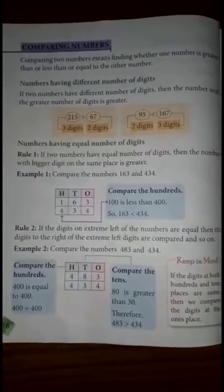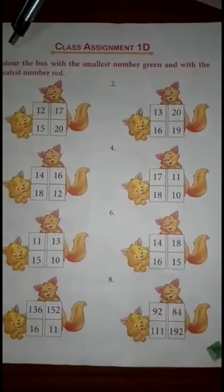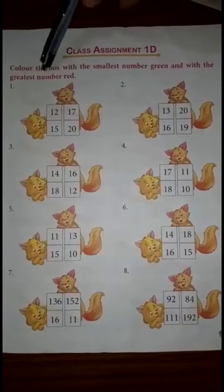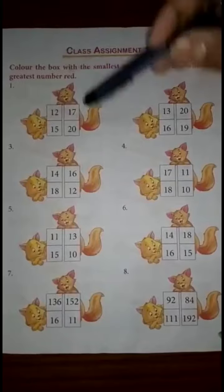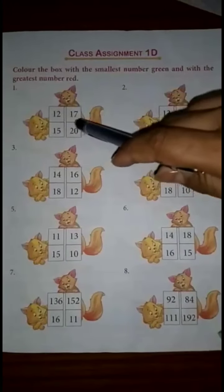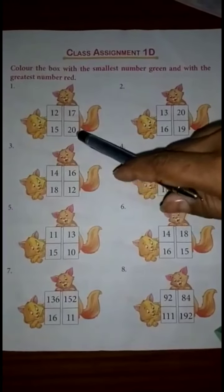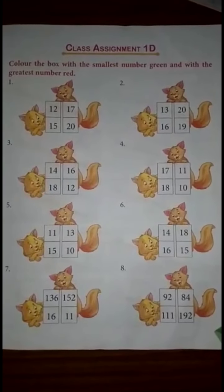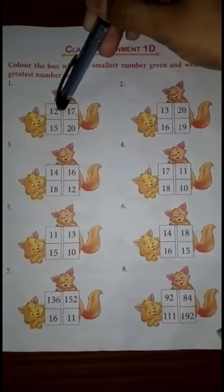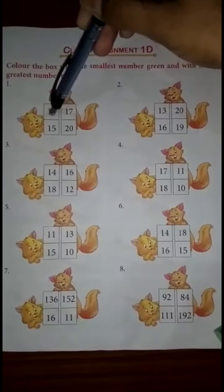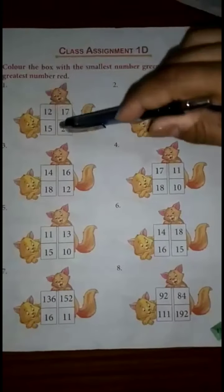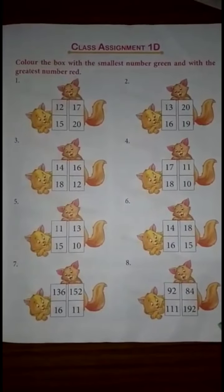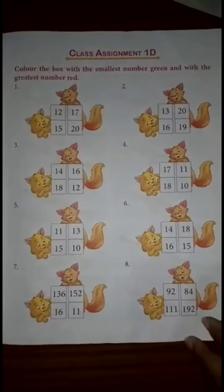This is your class assignment: color the box with the smallest number green and the box with the greatest number red. The numbers are 12, 70, 15, and 20. Color the smallest number green and the greatest number red.